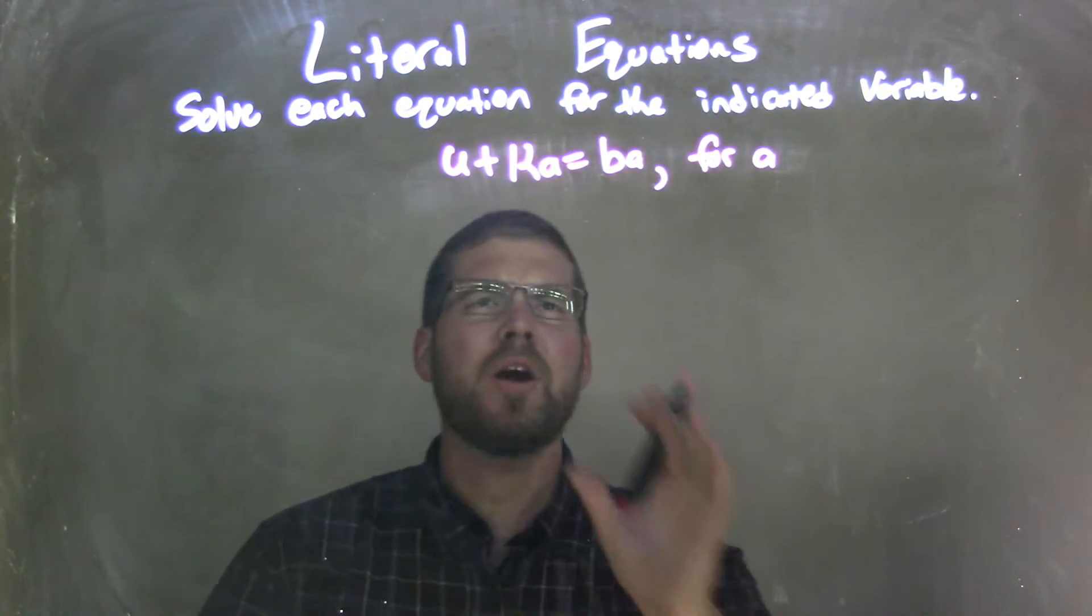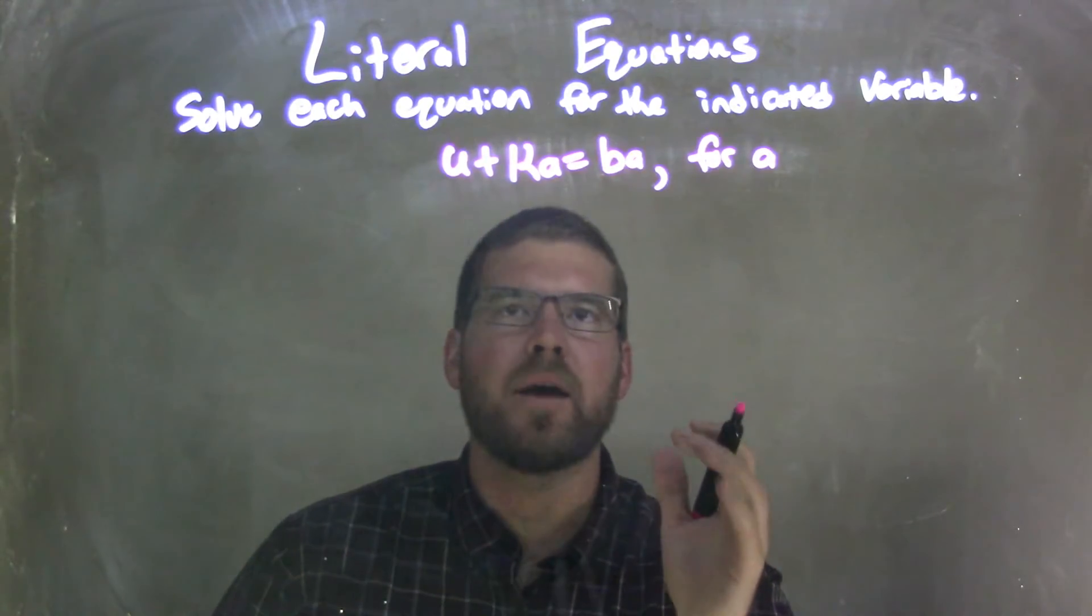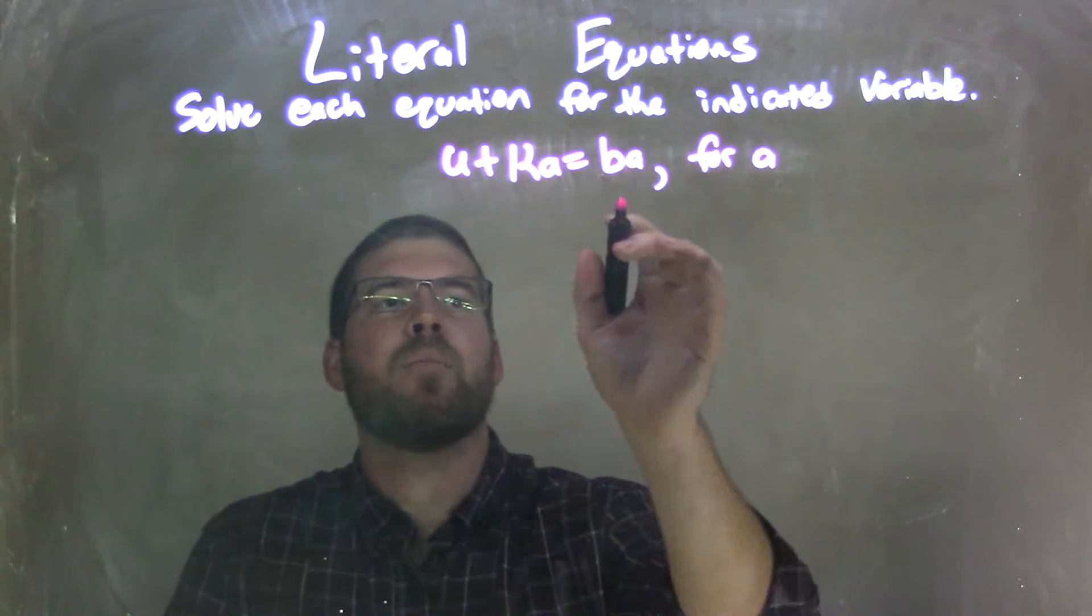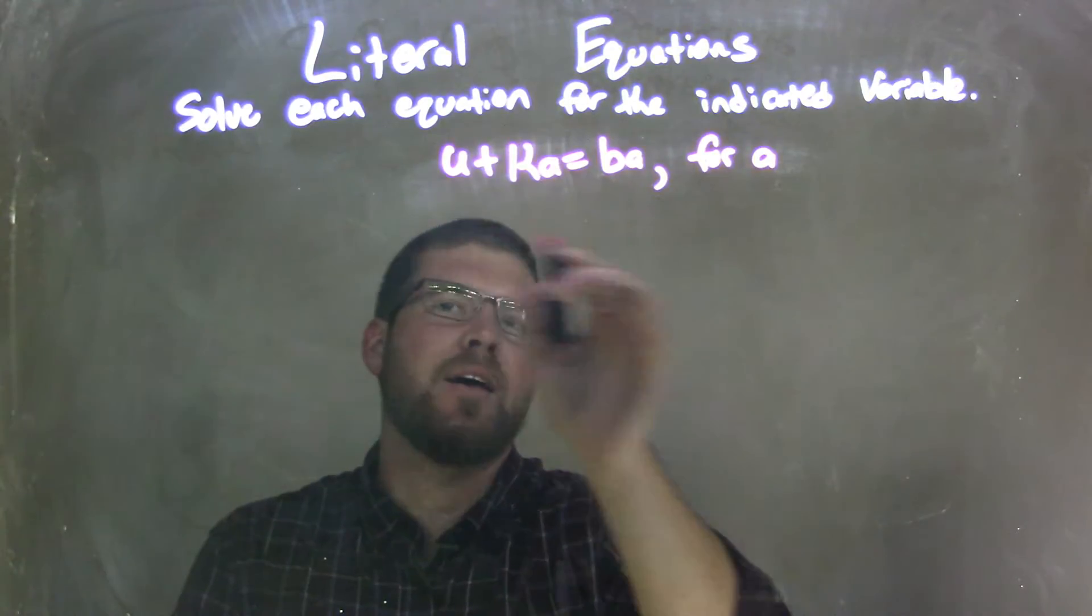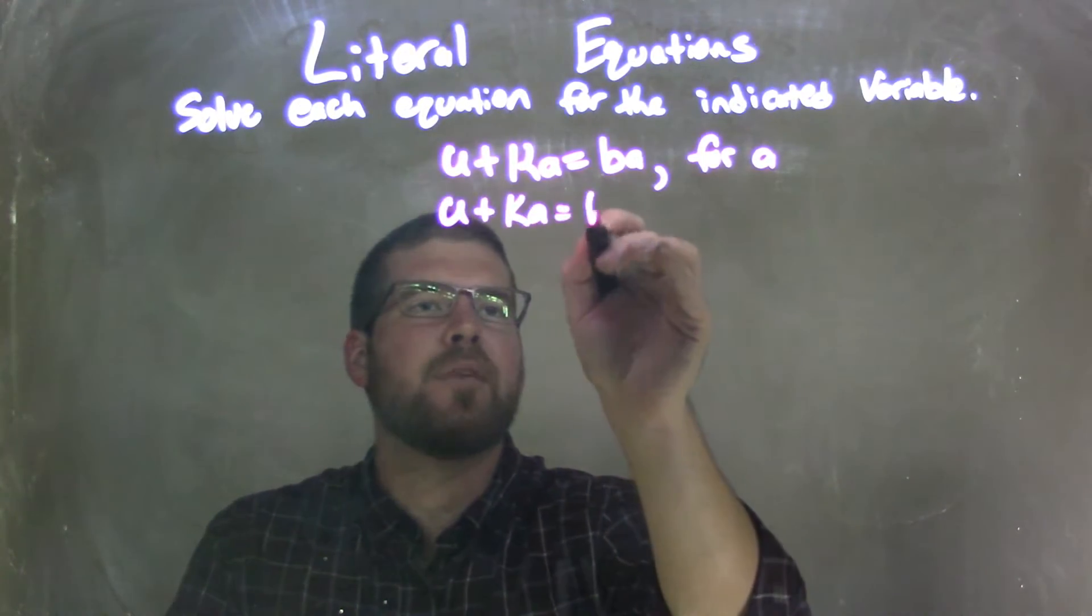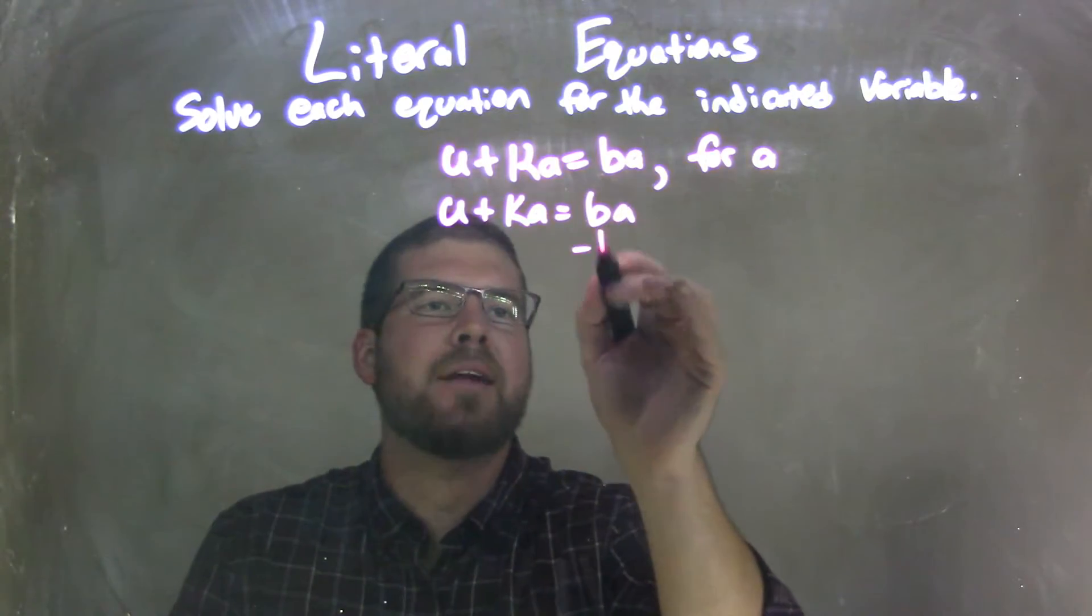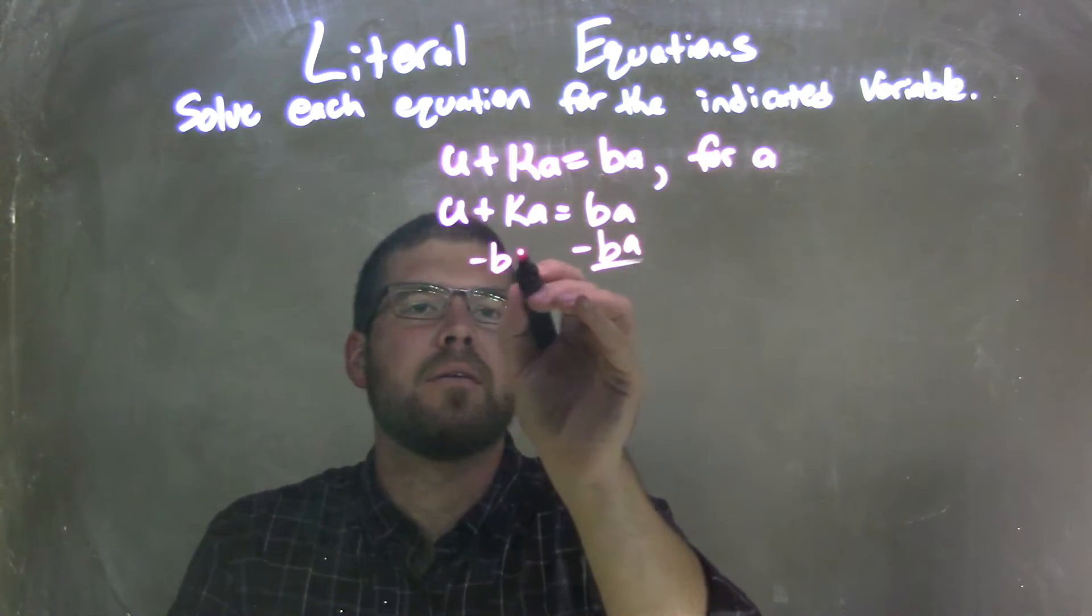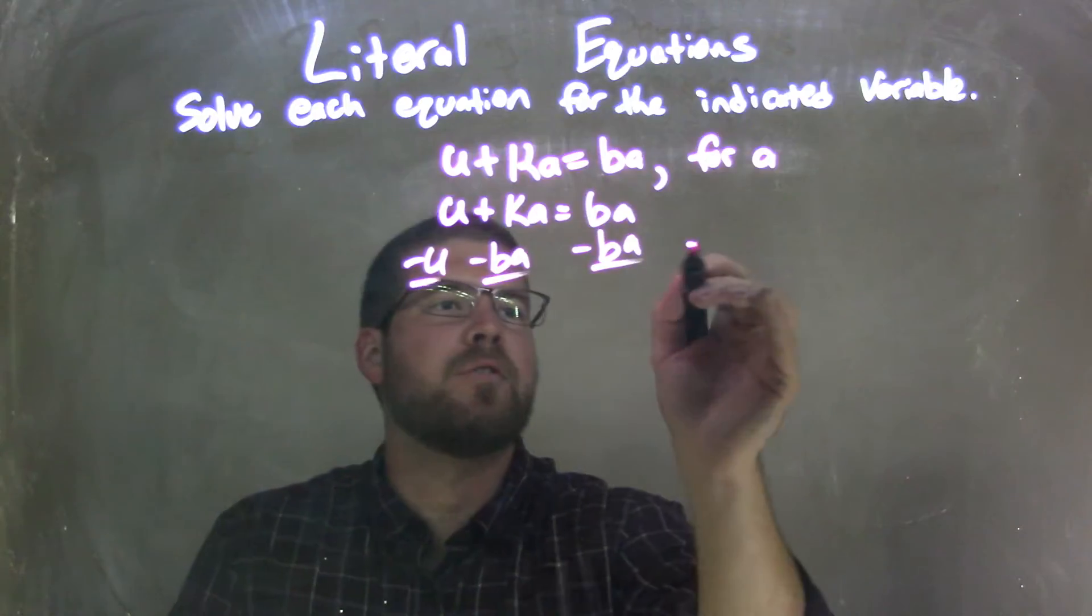Well, I want to bring all my like terms together. So what I'm going to do is bring over the a's to the right and the u to the left. So I'm going to rewrite this, u plus ka equals ba, and I'm going to subtract the ba to both sides, and I'll subtract a u to both sides.